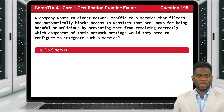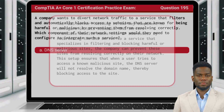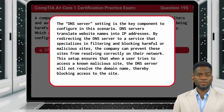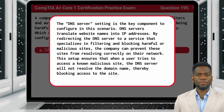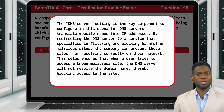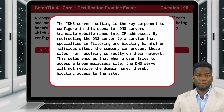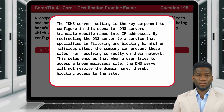The answer is A: DNS server. The DNS server setting is the key component to configure in this scenario. DNS servers translate website names into IP addresses. By redirecting the DNS server to a service that specializes in filtering and blocking harmful or malicious sites, the company can prevent these sites from resolving correctly on their network. This setup ensures that when a user tries to access a known malicious site, the DNS server will not resolve the domain name, thereby blocking access to the site.